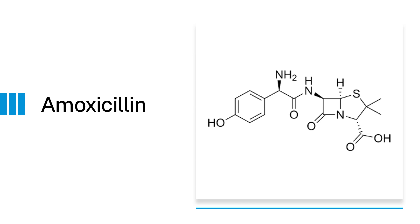And finally we have amoxicillin, which also has a slightly complicated structure. Amoxicillin is a penicillin antibiotic used to treat a variety of bacterial infections. It is one of the most commonly prescribed antibiotics for children. For drawing amoxicillin we will start by drawing the beta-lactam ring, because that is the core structure in this drug molecule. Then we will add the thiazolidine ring and the phenyl group, the hydroxyl group, and finally the amino group. Let me demonstrate how to draw this amoxicillin structure.